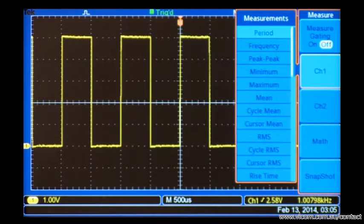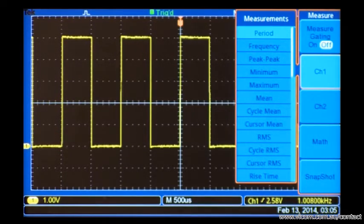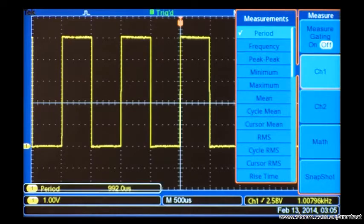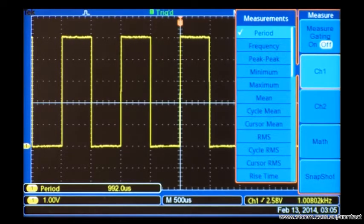Just like cursor measurements, I need to choose which channel I'll be measuring. Then, I specify the type of measurements I want to perform. In this case, a period measurement.